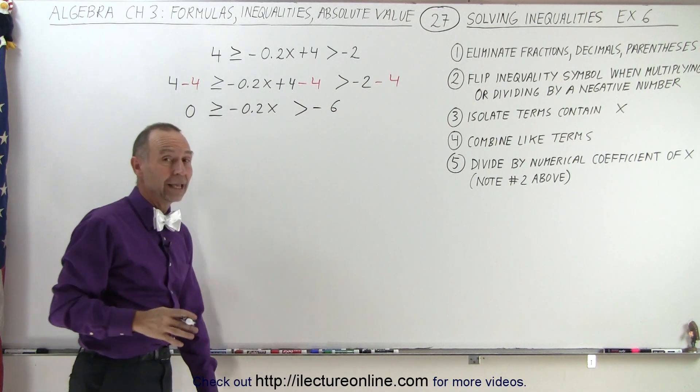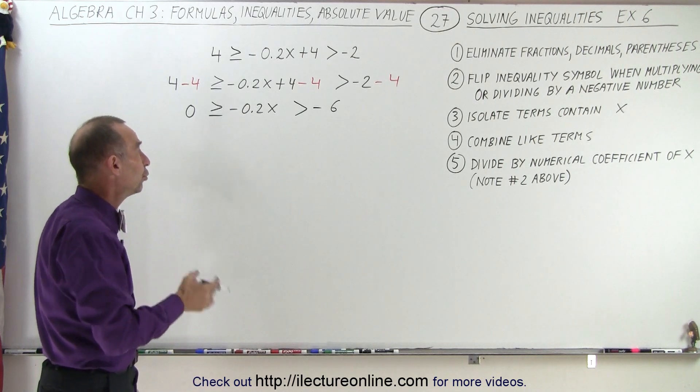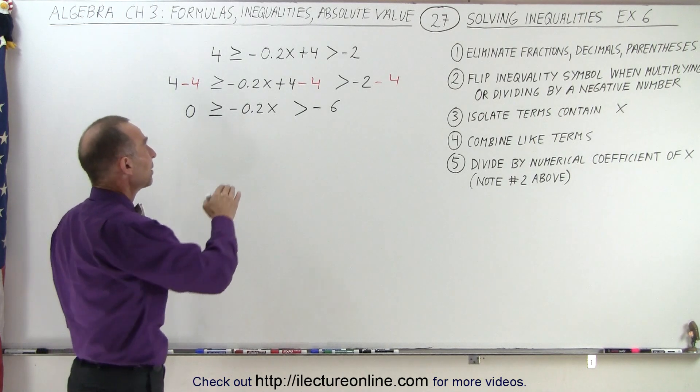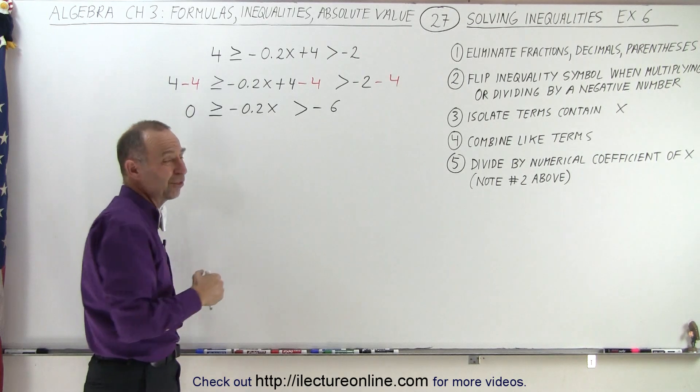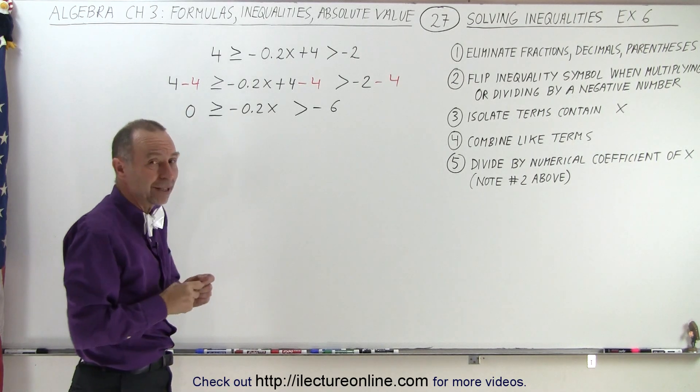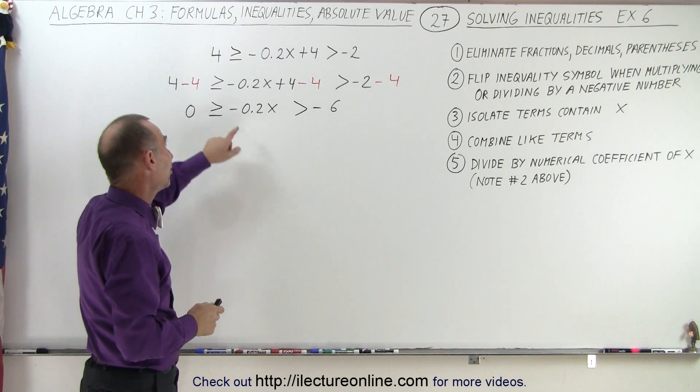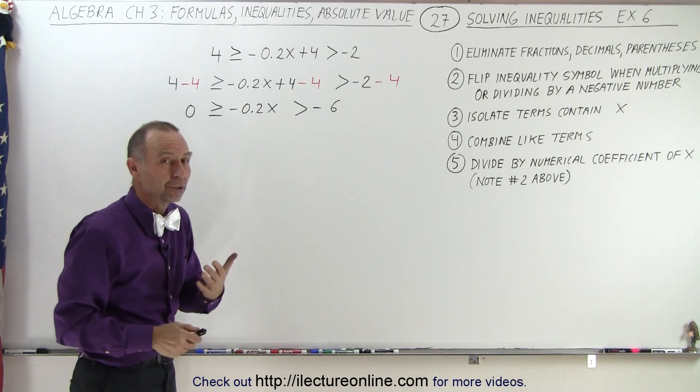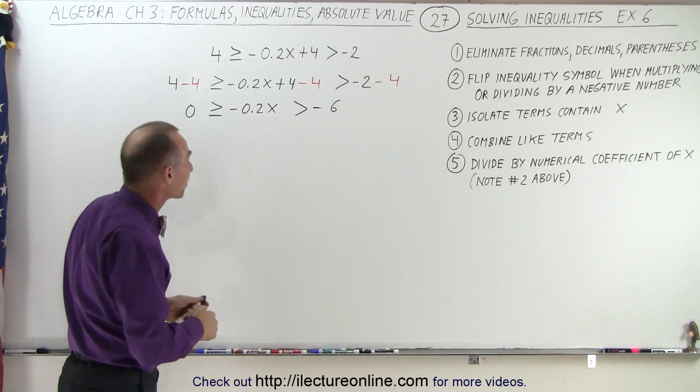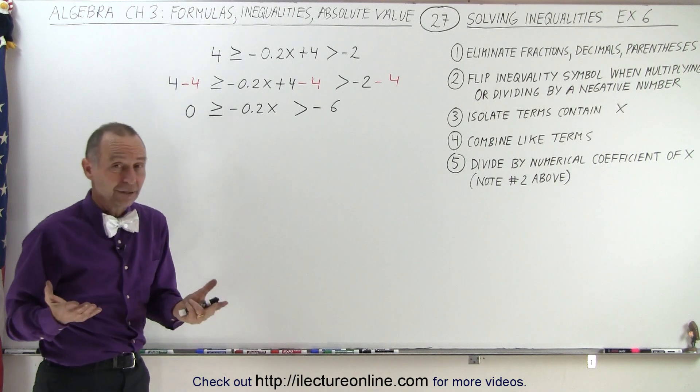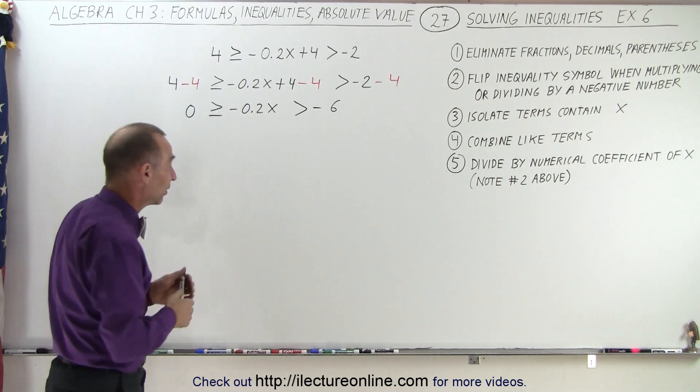Now let's get rid of the decimal. We can do so by multiplying everything by 10, or since we have 0.2, it's sufficient to multiply by 5. And since we have a negative here, we probably want to multiply by negative 5. Of course, when we multiply by a negative number, we're going to have to flip the inequality symbols.